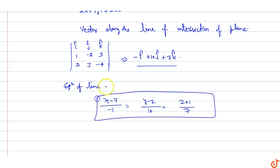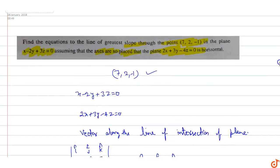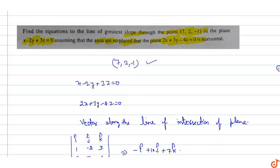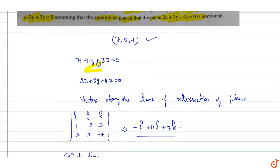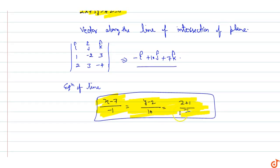This is the equation of the line of greatest slope: (x - 7) / (-1) = (y - 2) / 10 = (z + 1) / 7, through the point (7, 2, -1) in the plane x minus 2y plus 3z equals zero, assuming that 2x plus 3y minus 4z equals zero is the horizontal plane.